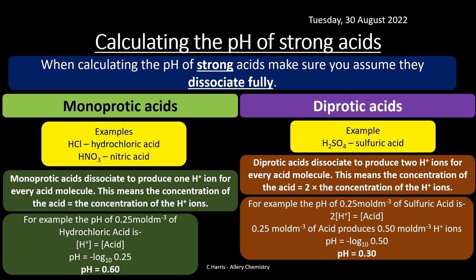For triprotic acids such as phosphoric acid, it's multiplied by 3 instead. Similar process — I think you get the idea.